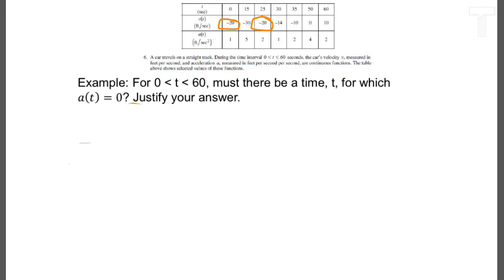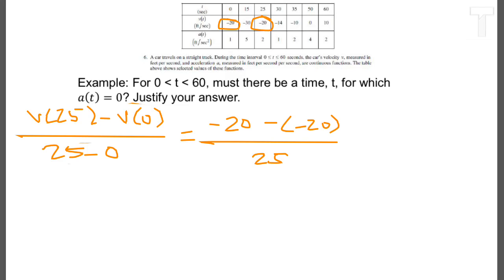So we want to say that v of 25 minus v of 0 over 25 minus 0 is going to equal negative 20 minus negative 20 all over 25, which equals 0. And again, that's supposed to equal the derivative value I care about. So here I've indicated that I know I'm going to use 25 and 0 as my a and b. And I know when I find the average rate of change of the v function there on that interval, I'm going to have 0.